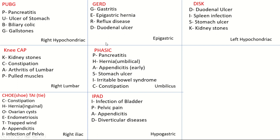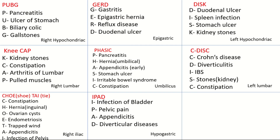In the middle we have the umbilical region, and the mnemonic for pain here is PHASIC. P is for pancreatitis, H is for umbilical hernia, A is for appendicitis — early appendicitis pain is felt in the umbilical region, S is for stomach ulcer, I is for IBS (irritable bowel syndrome), and C is for constipation.